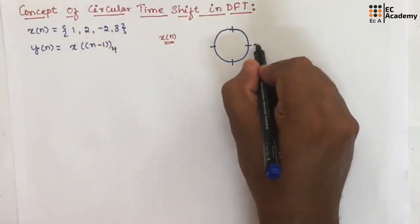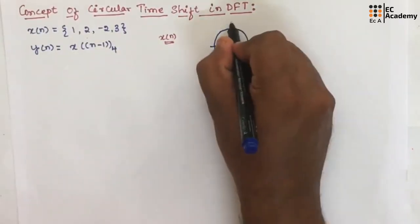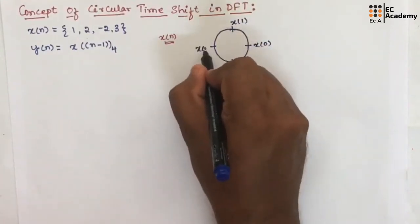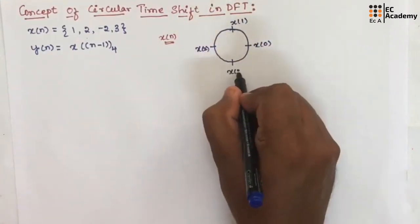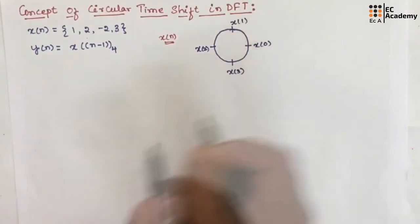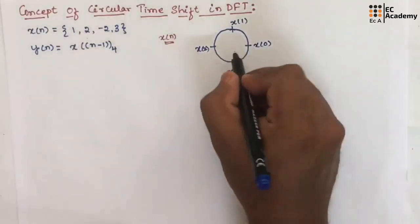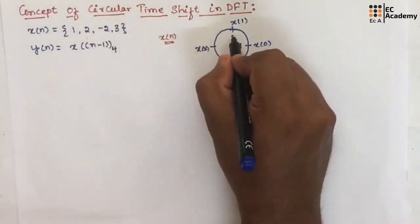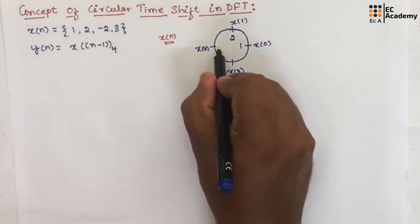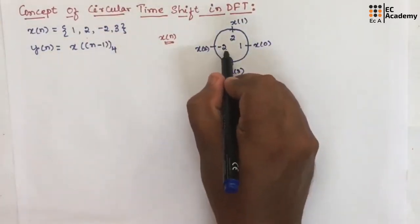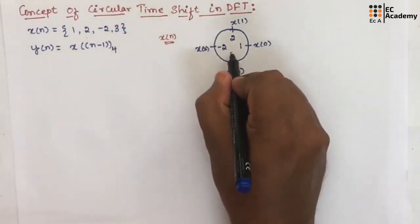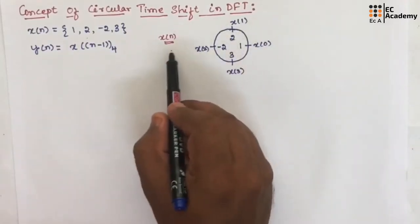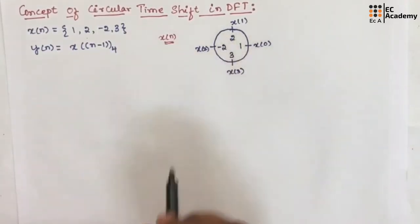Let us write x of 0, x of 1, x of 2, x of 3 on the unit circle. Now, x of 0 is 1, x of 1 is 2, x of 2 is minus 2, x of 3 is 3. This is the representation for x of n using a unit circle.